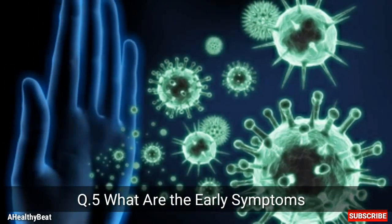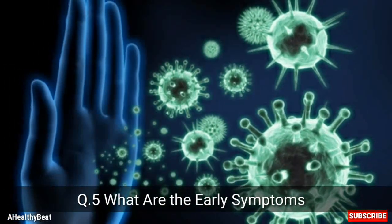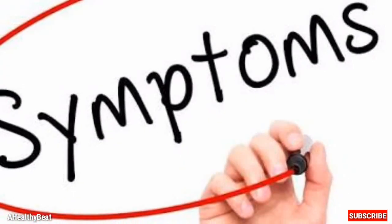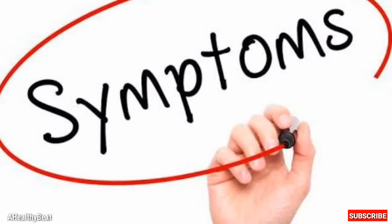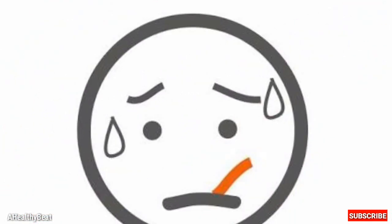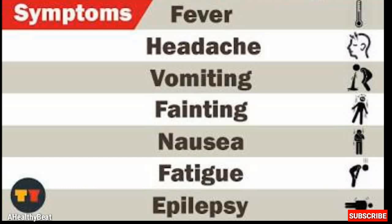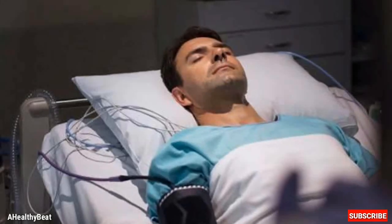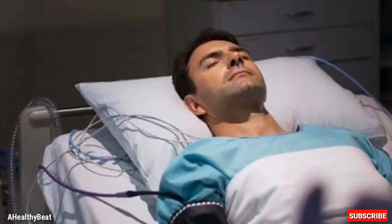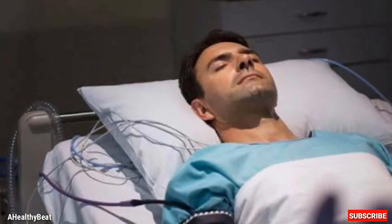Fifth question: what are the early symptoms? The initial symptoms are non-specific, characterized by sudden onset of fever, headache, muscle pain, confusion, nausea and vomiting. Neck rigidity and photophobia are also seen. The disease rapidly progresses with deterioration in consciousness, leading to coma within 5 to 7 days.